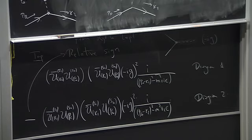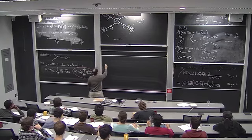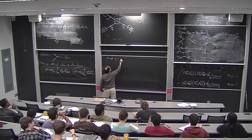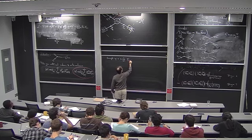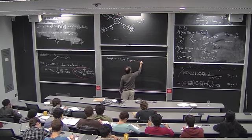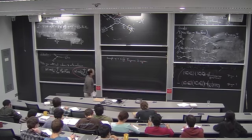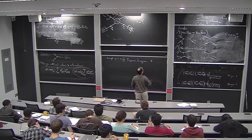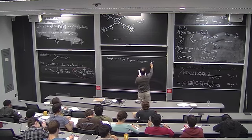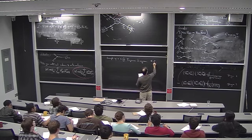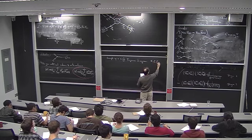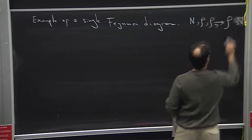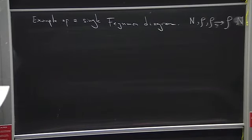Let me give another example — this is a Feynman diagram, not an amplitude. We're going to draw one diagram that contributes to the process of a nucleon interacting with two mesons and going into a meson and another nucleon.